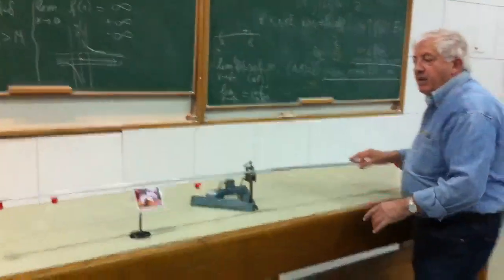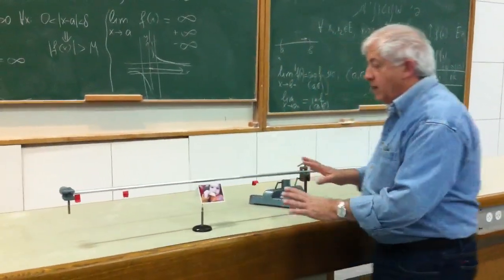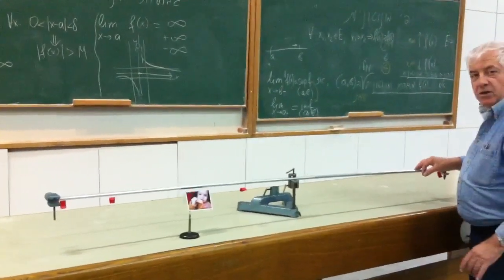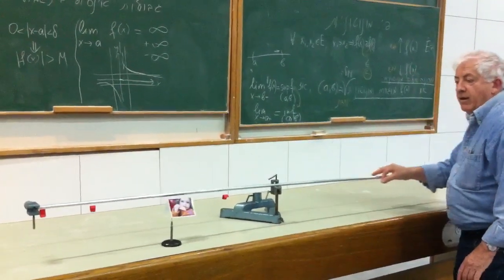The wire itself doesn't move because I see the markers. These two markers are not moving. They are in the place. Only the picture on the string is moving to the left and to the right.